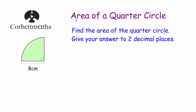So let's get started. Here we've got our quarter circle, so let's turn it into a whole circle. We've got a whole circle and our quarter circle here in green. We've got a radius of eight centimetres, so to get the area of the whole circle we're going to do pi times eight squared — pi times the radius squared.